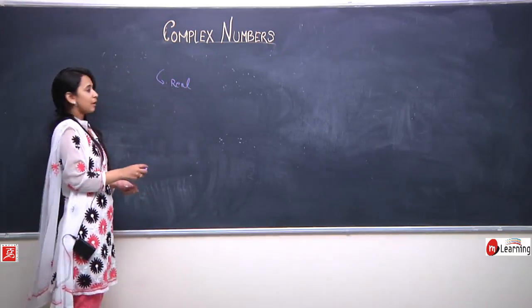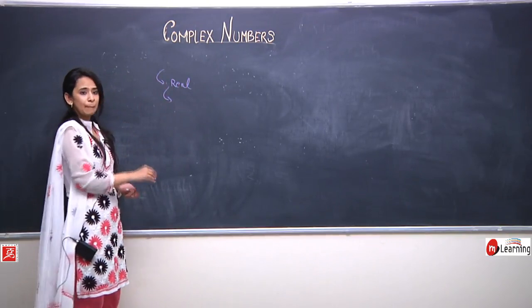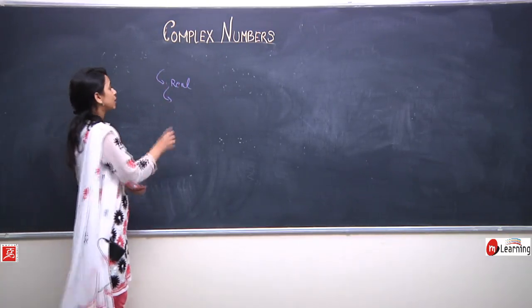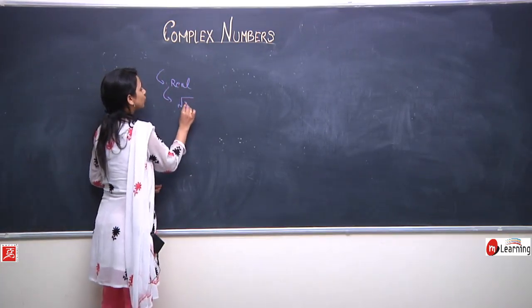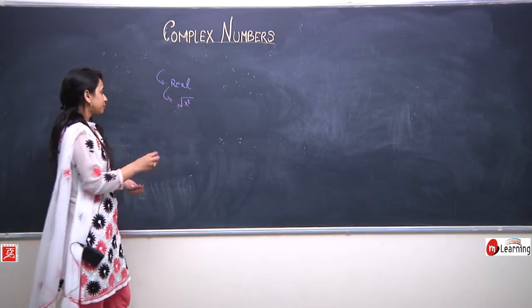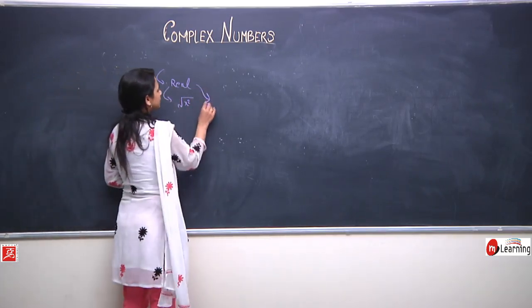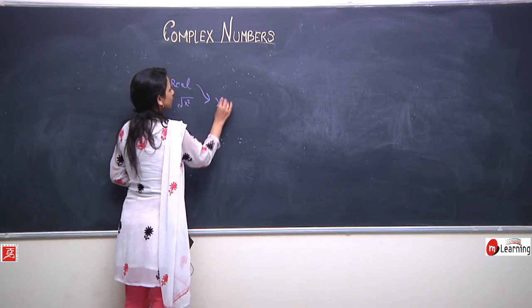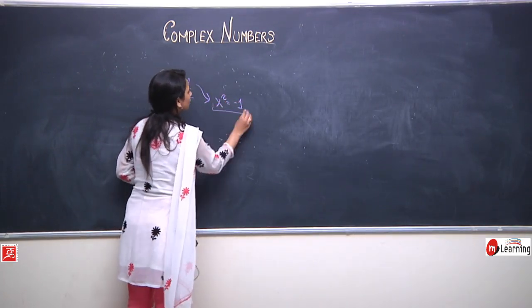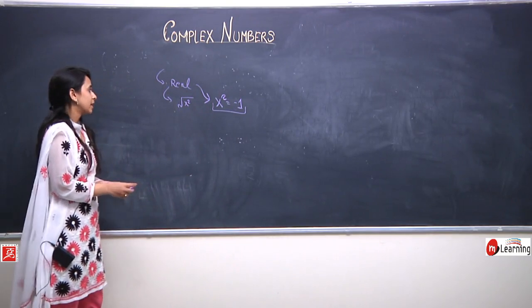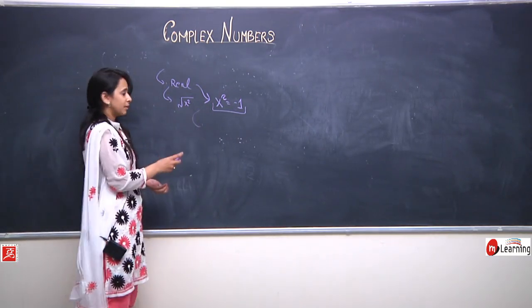Eventually, we found that the real number system was not completely closed either. It was not closed for finding square roots of all numbers. For example, in the real number system there existed no number such that x squared equals minus 1. This led to the evolution of complex numbers.